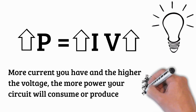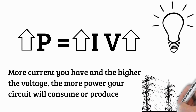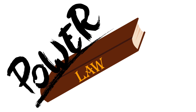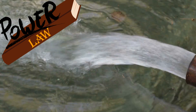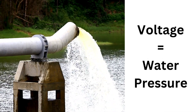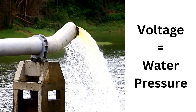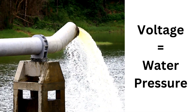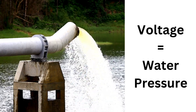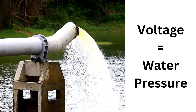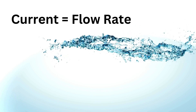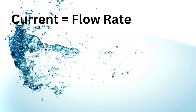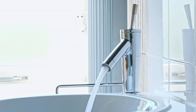Let's look at a real-world analogy for the power law — comparing electrical power to water flowing through a pipe. The voltage is like the water pressure: just like higher water pressure pushes more water through a pipe, a higher voltage pushes more current through a circuit. The current is like the flow rate of water. Electrical current, measured in amperes, is the flow of electric charge through a conductor. The more water flowing through the pipe, or the more current flowing through the wire, the greater the flow.